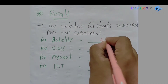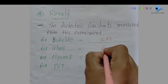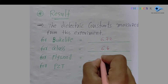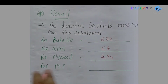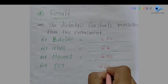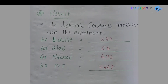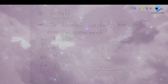To summarize the results: the dielectric constant for bakelite is 6.72, for glass it is 6.4, for plywood it is 4.75, and for PZT it is 2267. These are the final dielectric constant values for all four materials. Thank you very much.